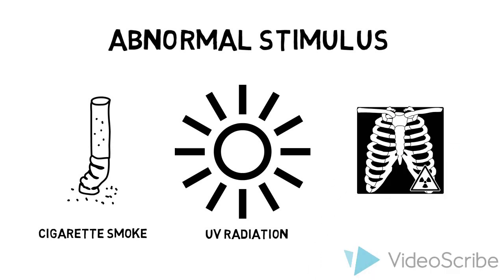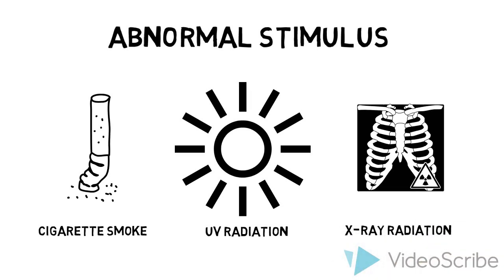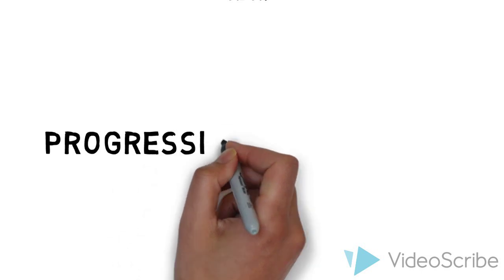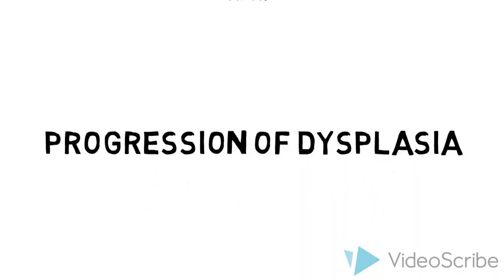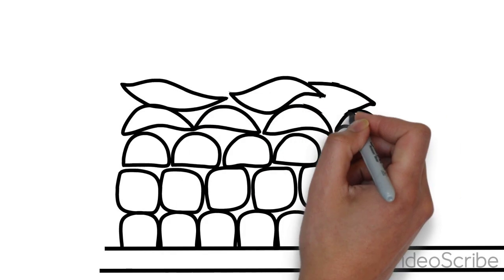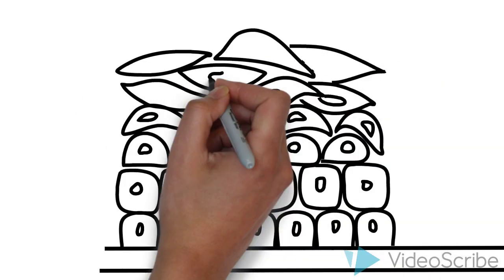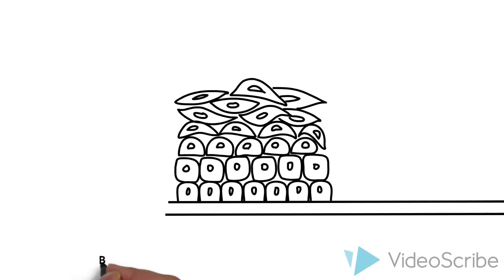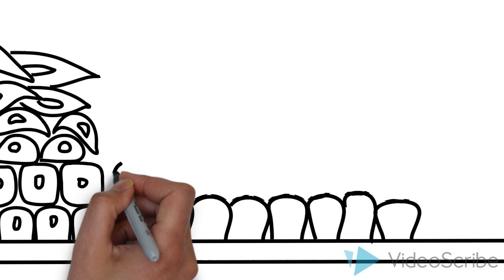Dysplasia is often part of a pre-malignant process. We will use stratified squamous cells as an example. Recall that stratified squamous cells exist as such and are bound to a basement membrane.